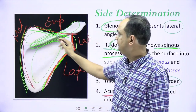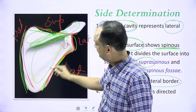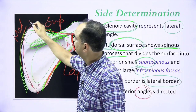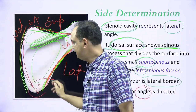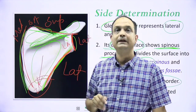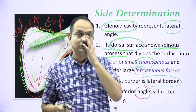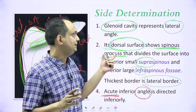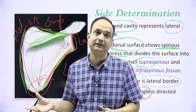The fourth point is that there is an angle which is highly acute — that is the inferior angle. Since it is a triangular plate, you have the lateral angle, inferior angle, and superior angle. Out of these three, the inferior angle is the acute angle which always faces downward. By these four points, you are able to identify whether it is a right or left scapula.